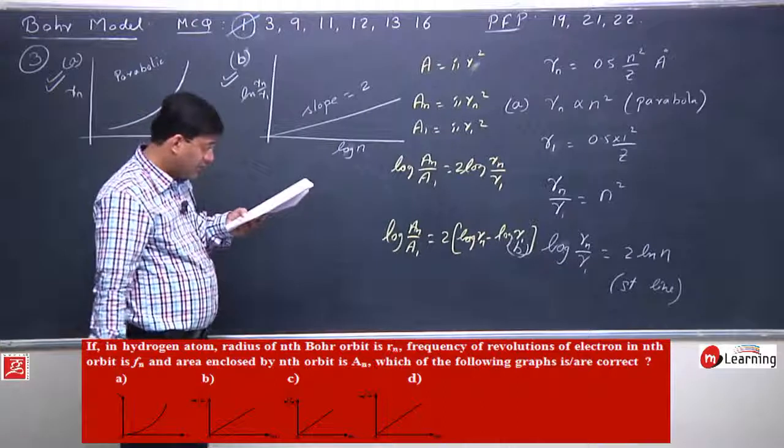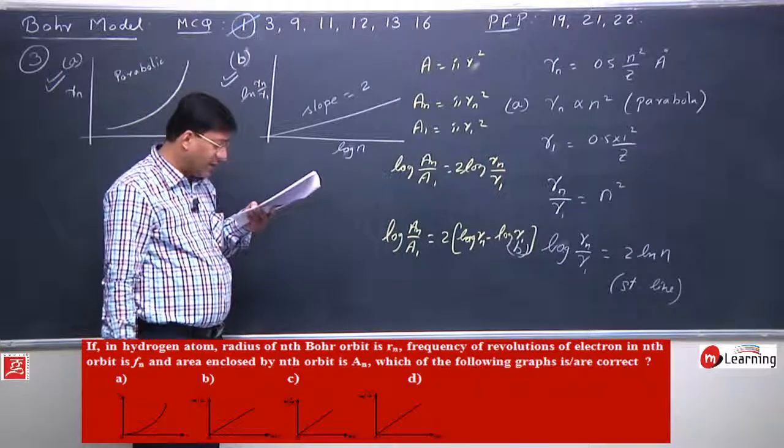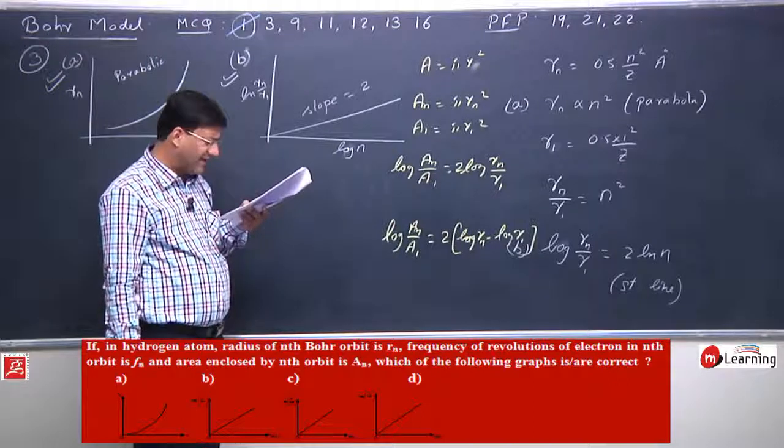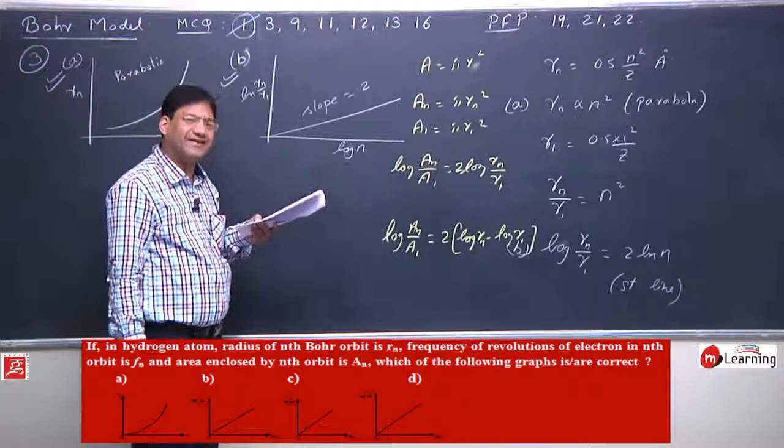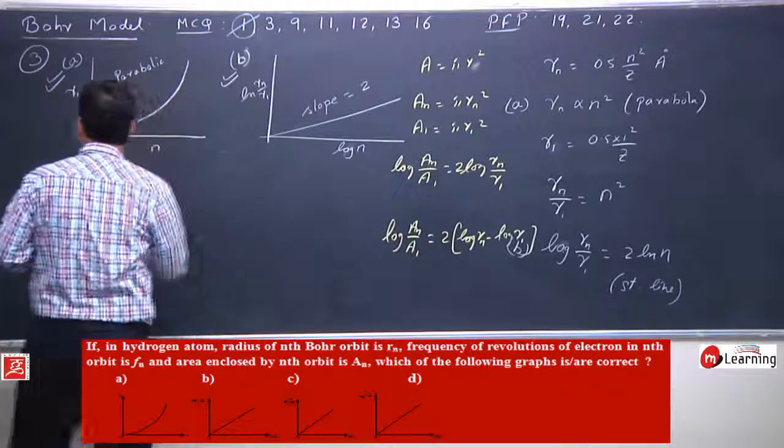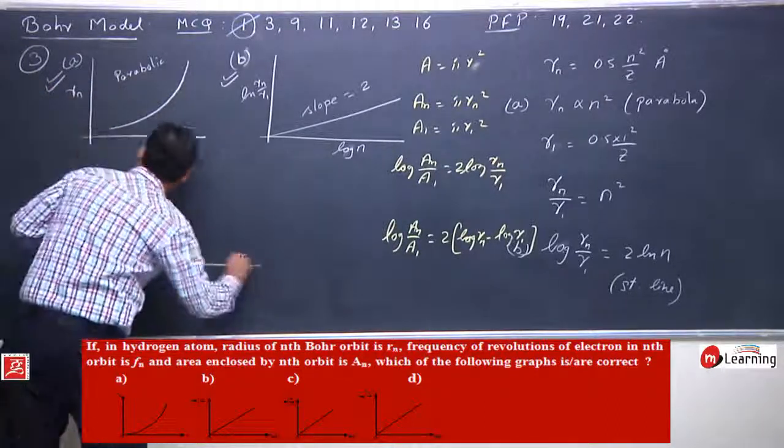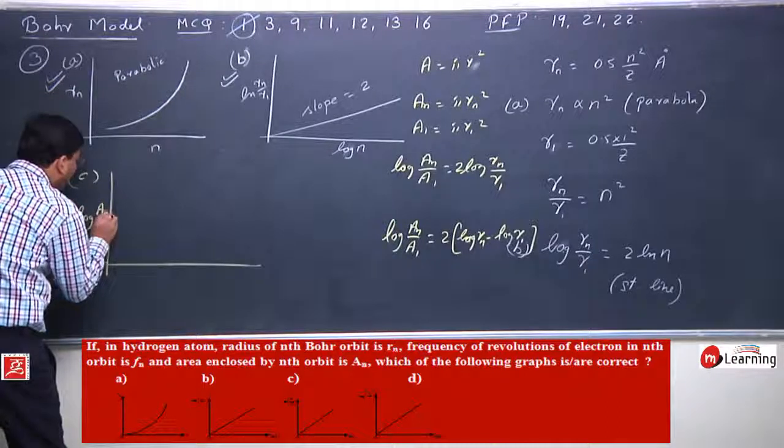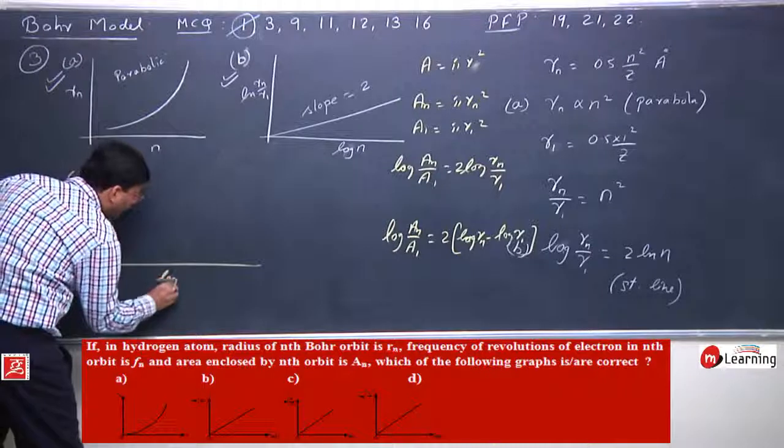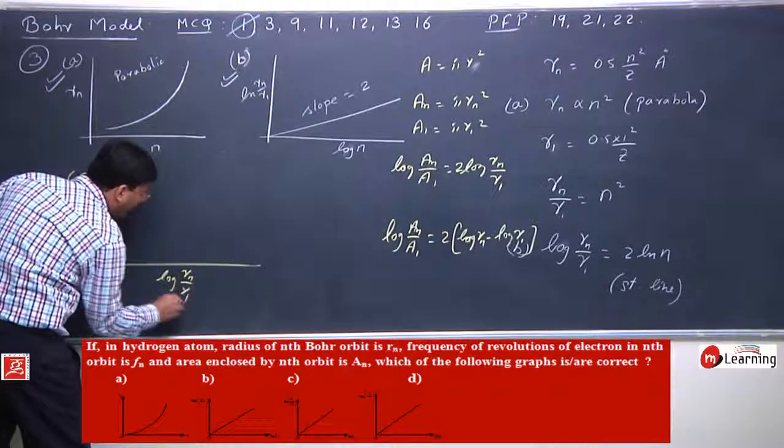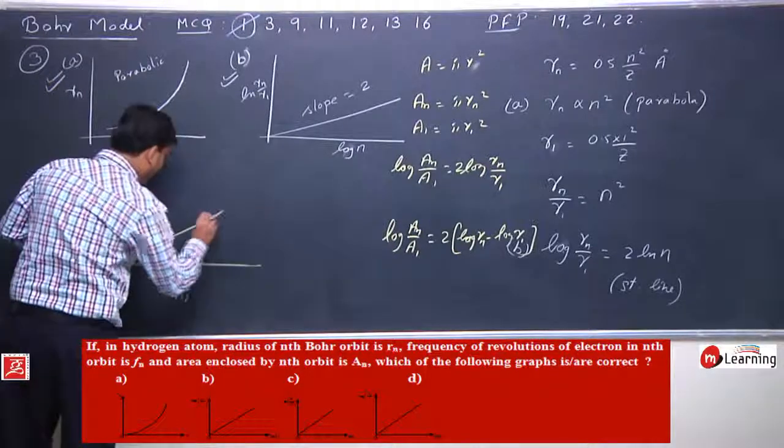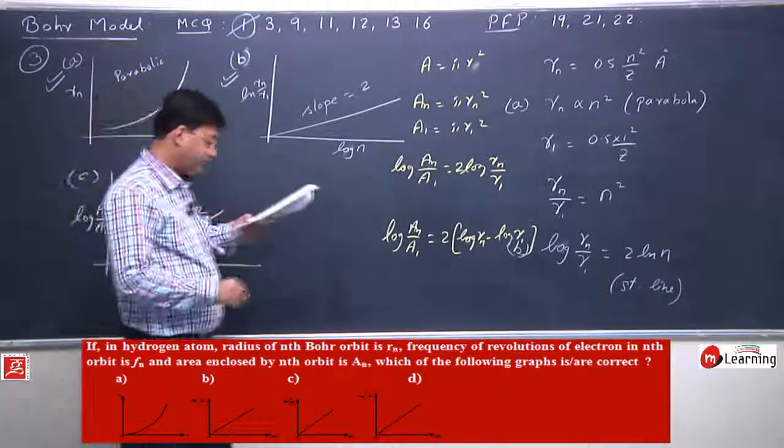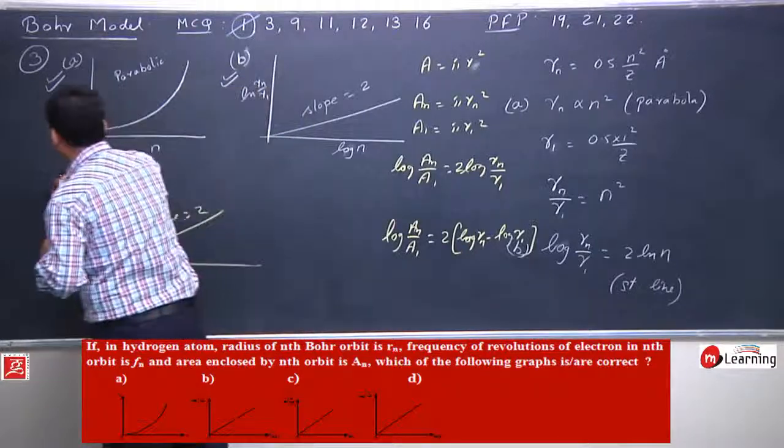This is straight line equation. This is intercept. Log An upon A1 versus log of rn upon r1, here is straight line and this is 2. So c can be correct answer.